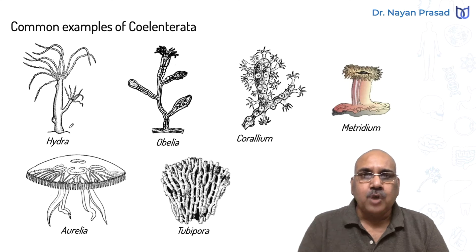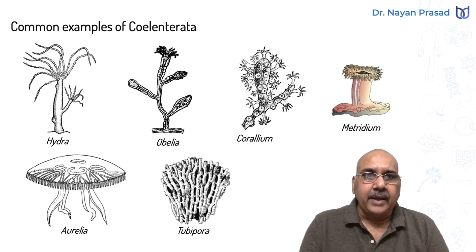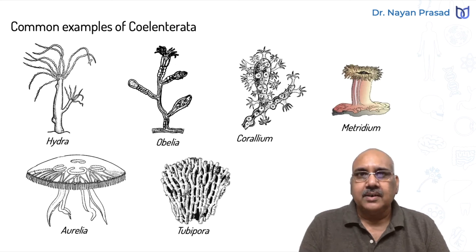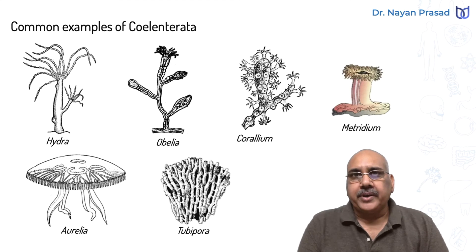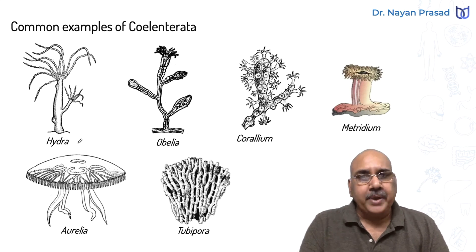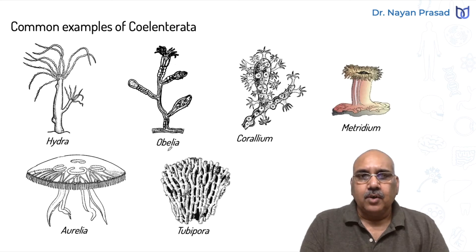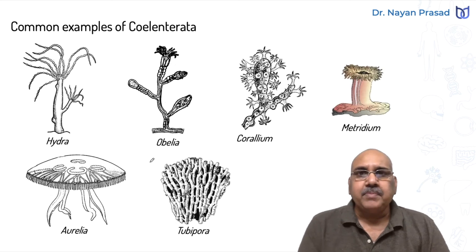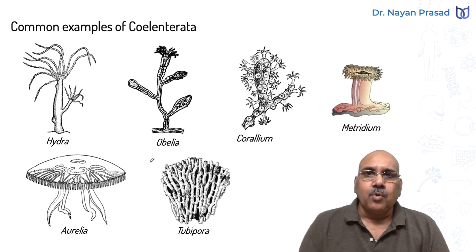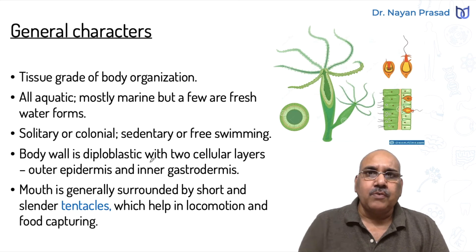Hydra is the most common freshwater coelentrate. It has a tubular body and around the mouth several small thread-like structures called tentacles are seen. Tentacles help in locomotion and food capturing. In Phylum Coelentrata, some members are free-swimming while some others are sedentary, remaining fixed. Obelia is sedentary in nature.